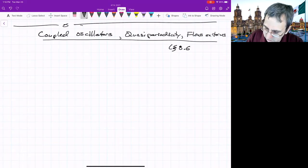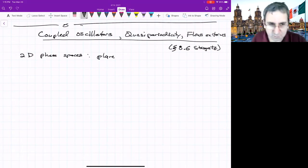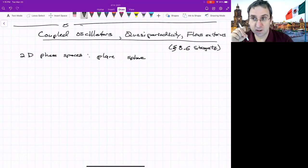Section 8.6 Strogatz. We've looked at some 2D phase spaces - the plane and index theory, Poincaré-Hopf index. We talked about the sphere. There is something interesting about the sphere in that there has to be at least one fixed point.